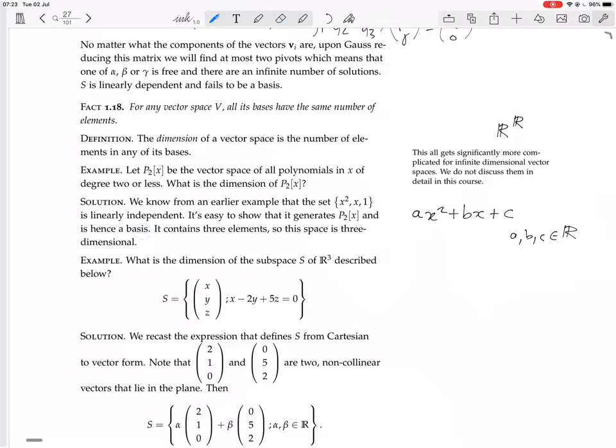How do you show that it generates P2(x)? We want to express any polynomial of degree 2 or less, so anything like ax squared plus bx plus c as a linear combination of x squared, x, and 1. But it actually already is such a thing. It's a times x squared plus b times x plus c. So clearly, this set generates P2. This set is linearly independent and it generates P2, so it's a basis. It contains three elements, so this space is three-dimensional.